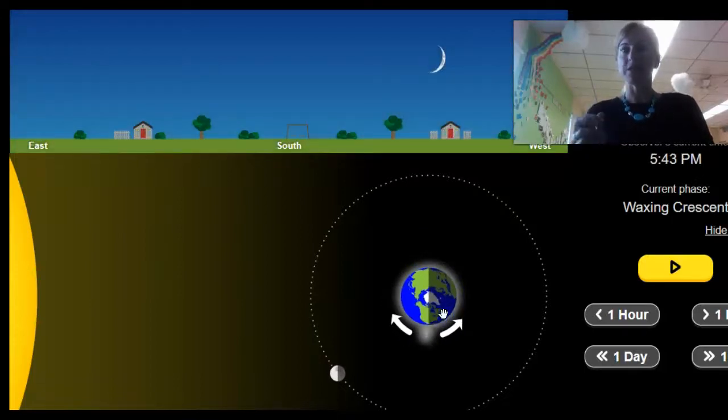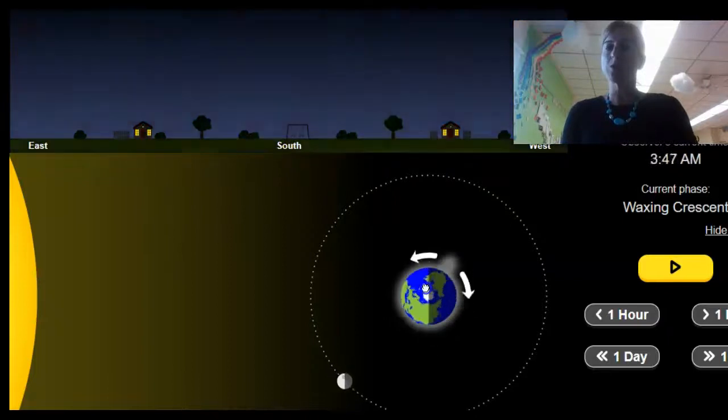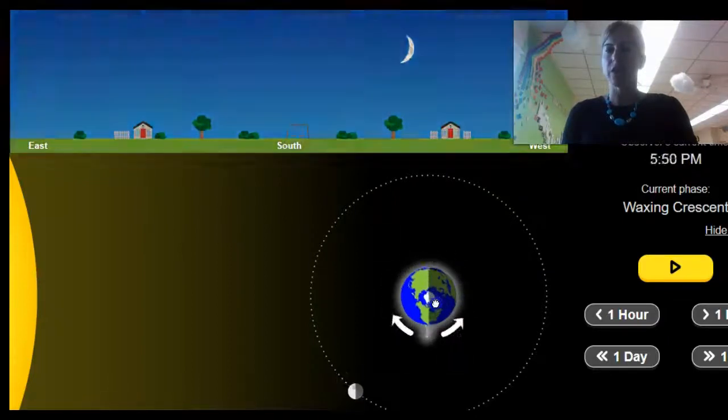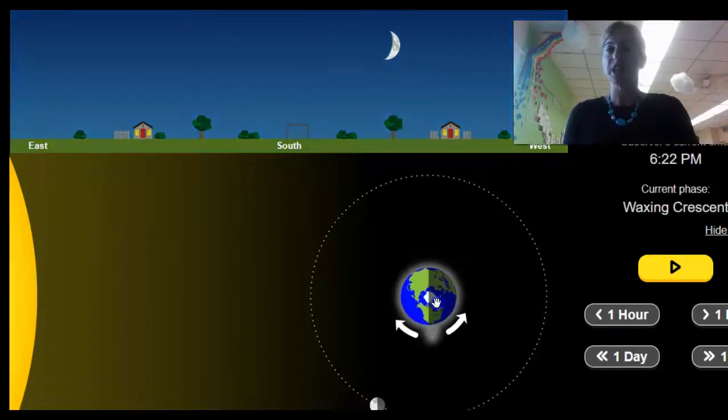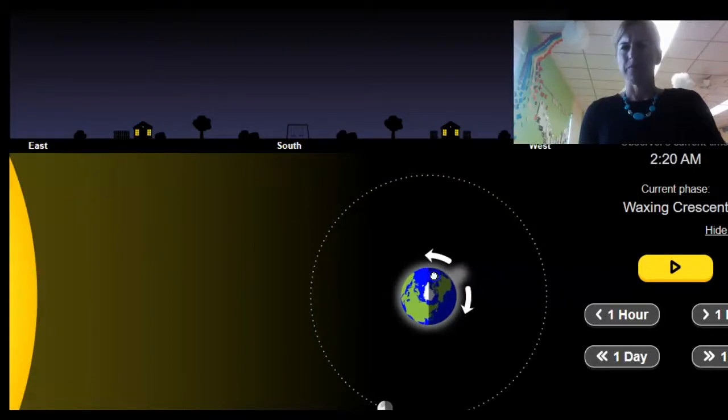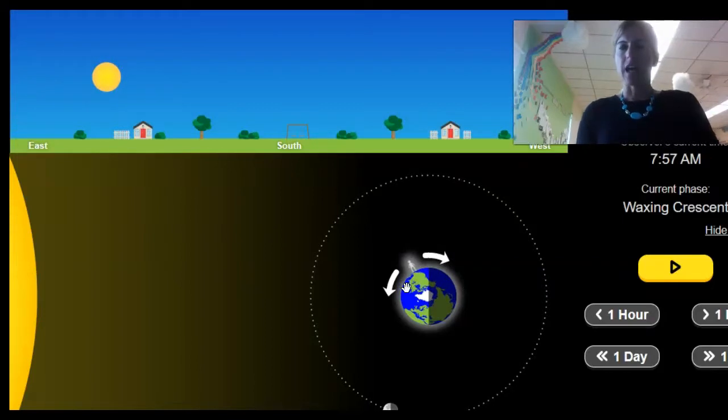So that's a different position for where the sun is. But what's causing that sun to move is me rotating the earth. By me spinning the earth around and around, it's changing the position of the sun in the sky.